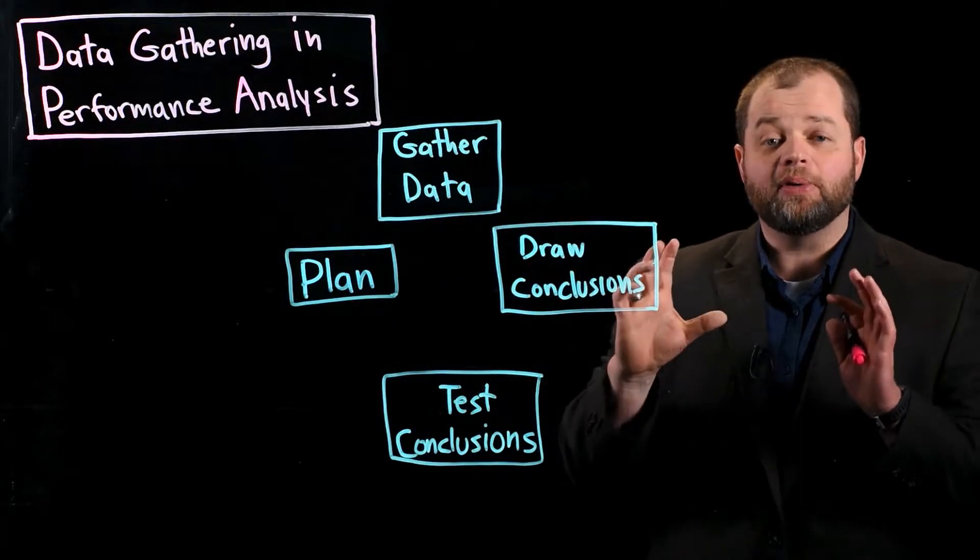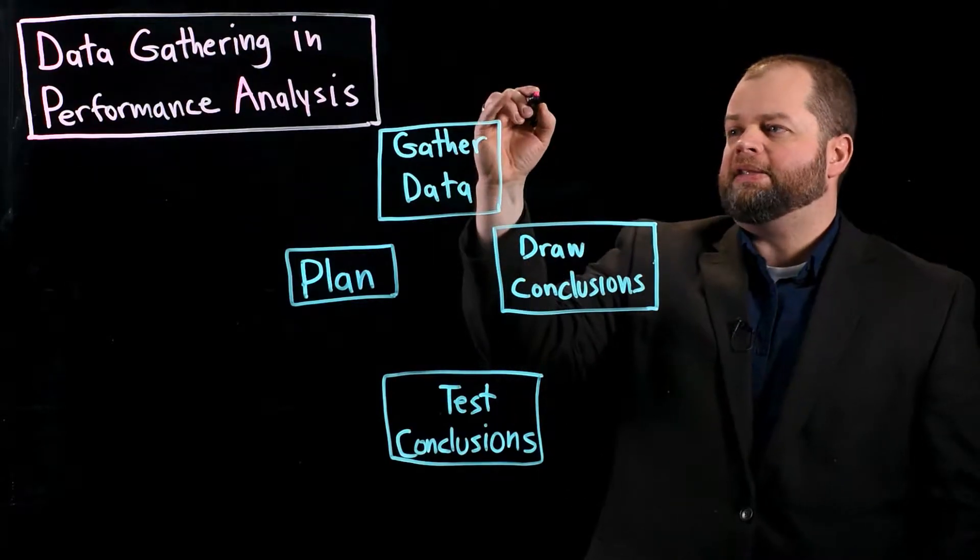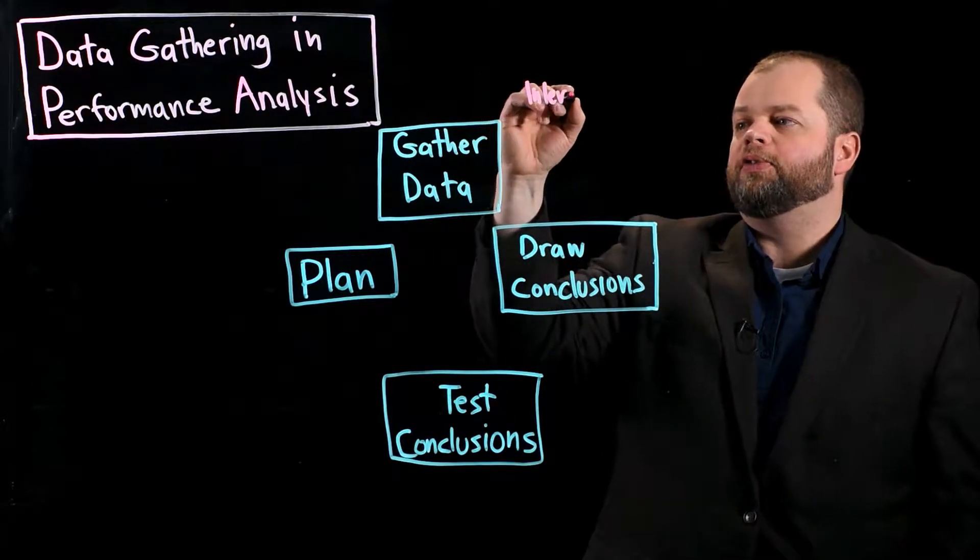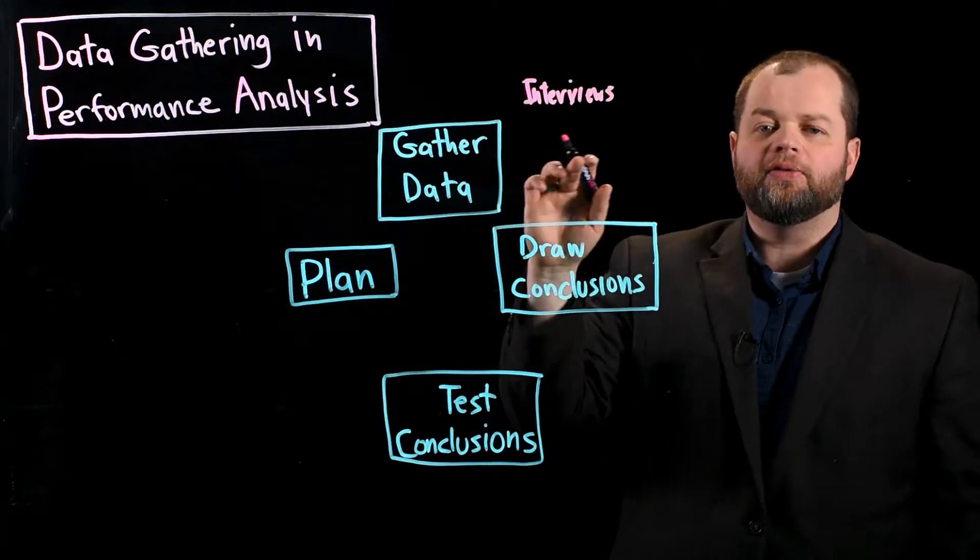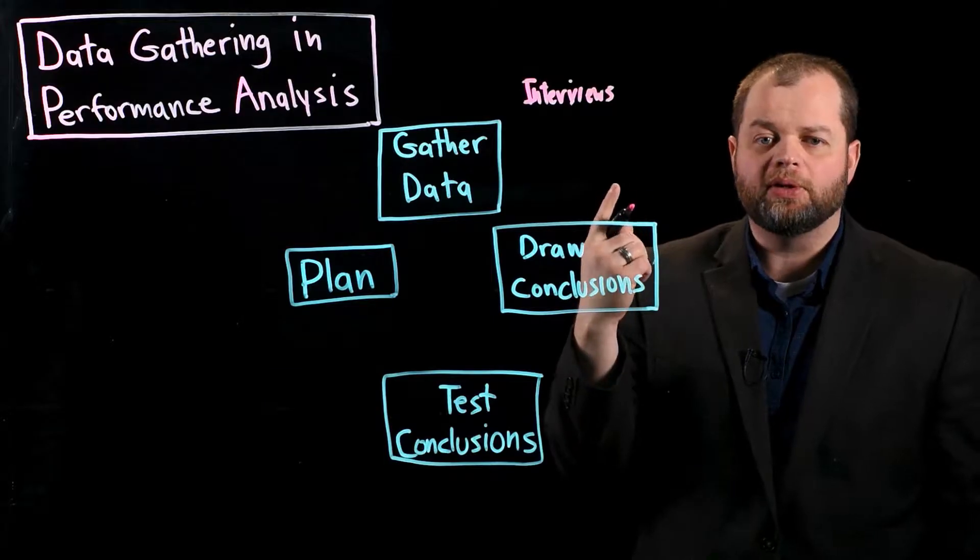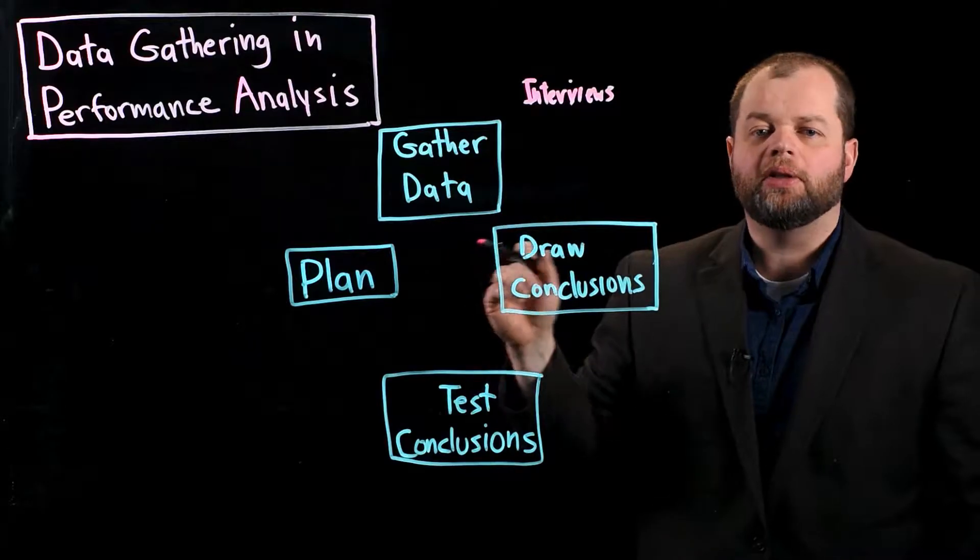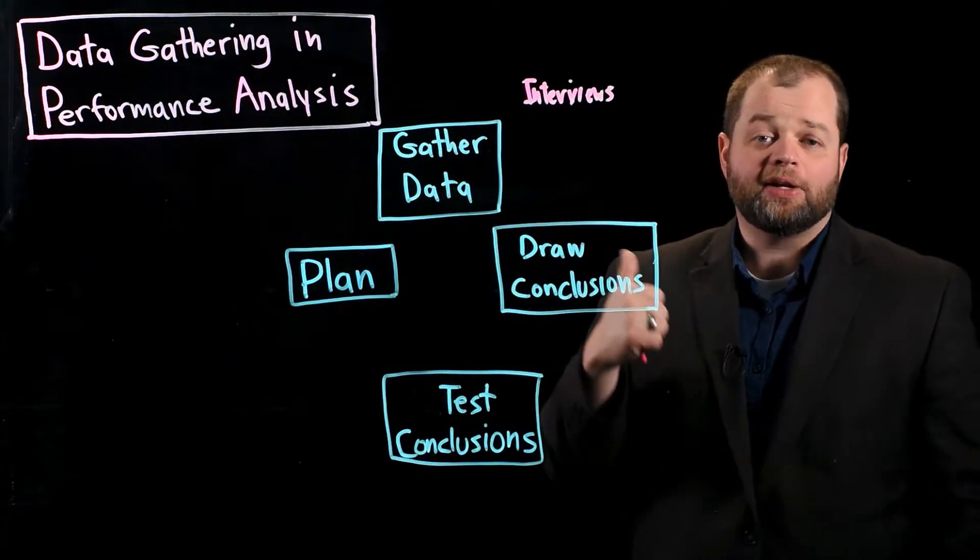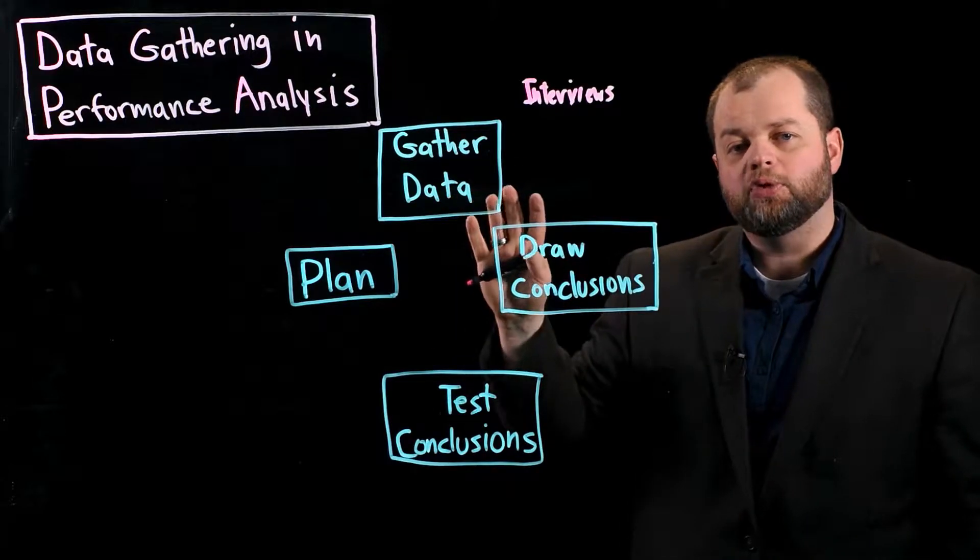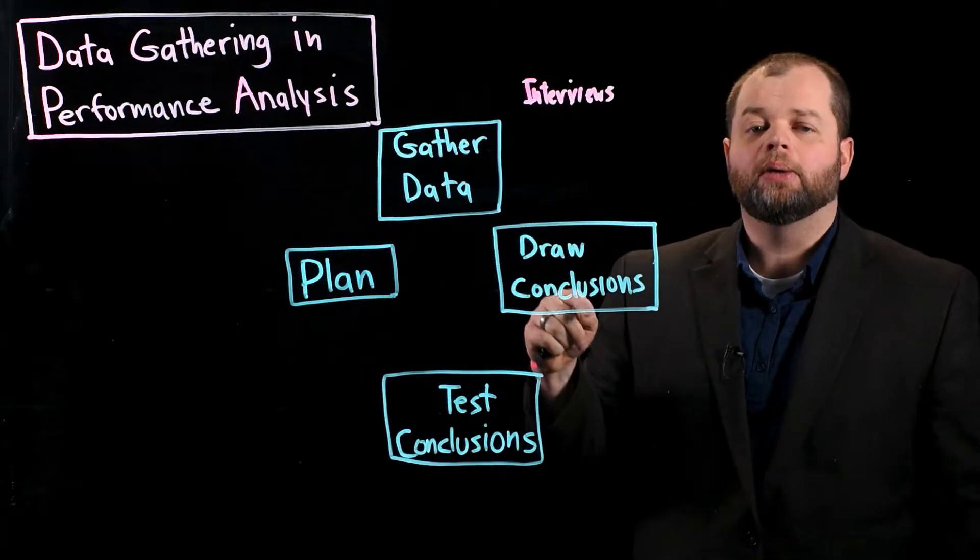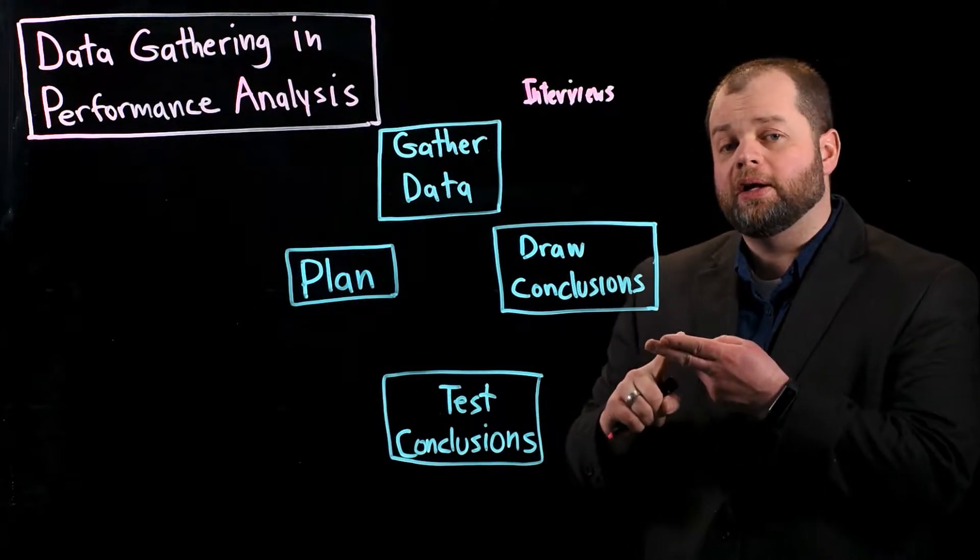Now the next step is gathering the actual data. And so this is where you would do all of those data gathering activities. So these can include things like interviews. Conduct interviews. Start with your client. Whoever is hiring you, talk to them and find out what the real issues are from their perspective. And then talk to lots of other people, the actual performers, supervisors, trainers, anyone who's involved with that group who has a stake in what's going on and has some insights on what the performance issues are and also what the causes of those issues are.